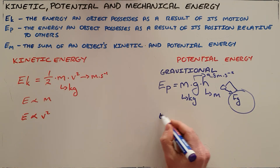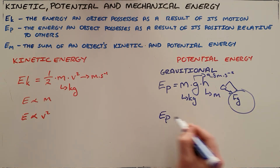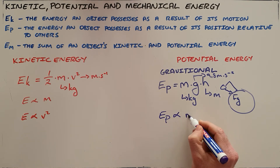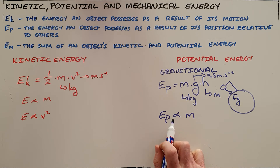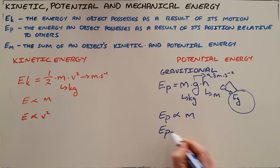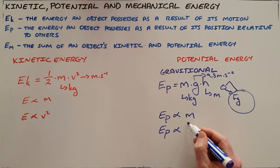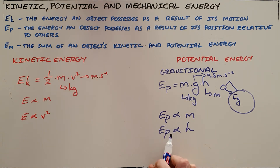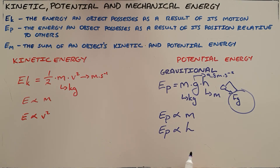This shows us that the potential energy an object possesses is directly proportional to its mass — a heavier mass has more energy or more potential to fall down to the earth — and it is also directly proportional to the height above the earth, meaning the higher an object is, the more potential energy it has to fall back down to the surface of the earth.